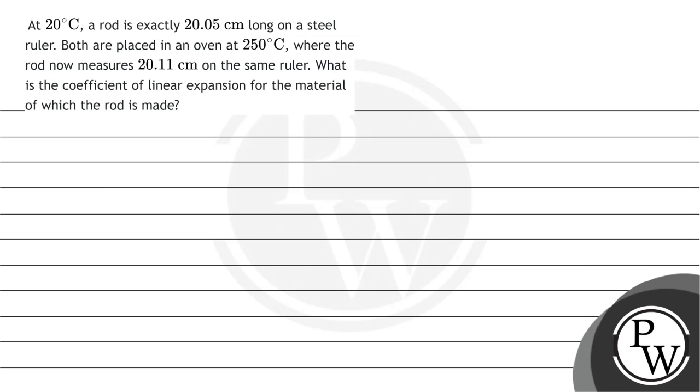Hello, let's read the question. The question says that at 20 degrees Celsius, a rod is exactly 20.05 cm long on a steel ruler. Both are placed in an oven at 250 degrees Celsius where the rod now measures 20.11 cm on the same ruler. What is the coefficient of linear expansion for the material of which the rod is made?